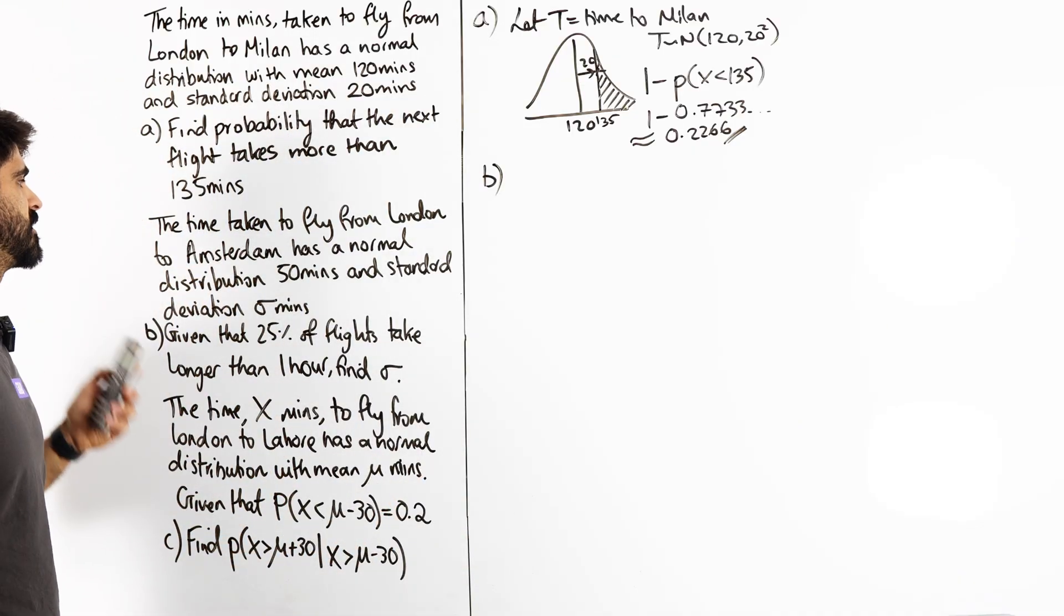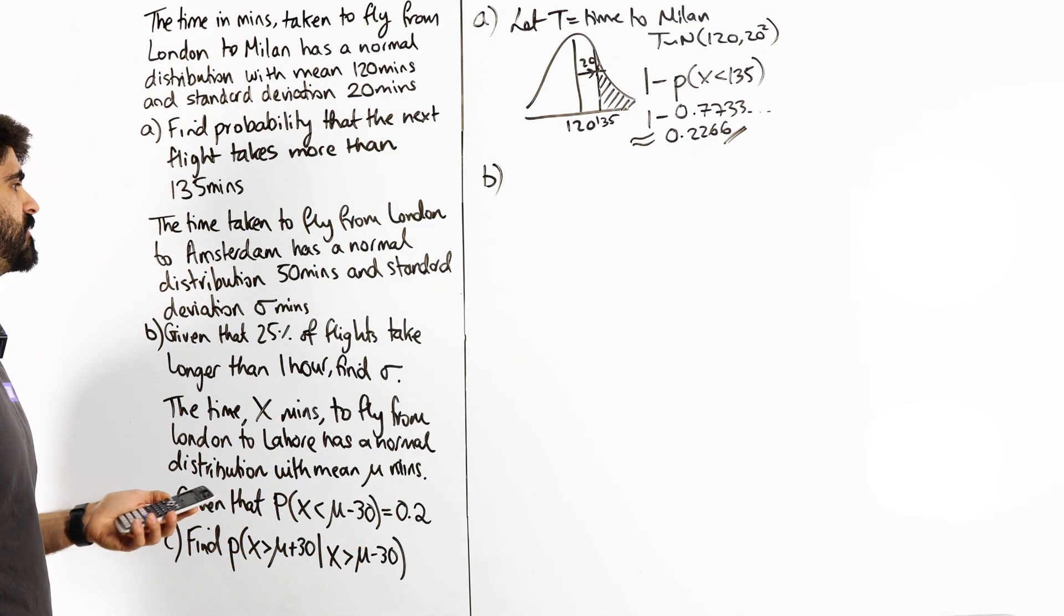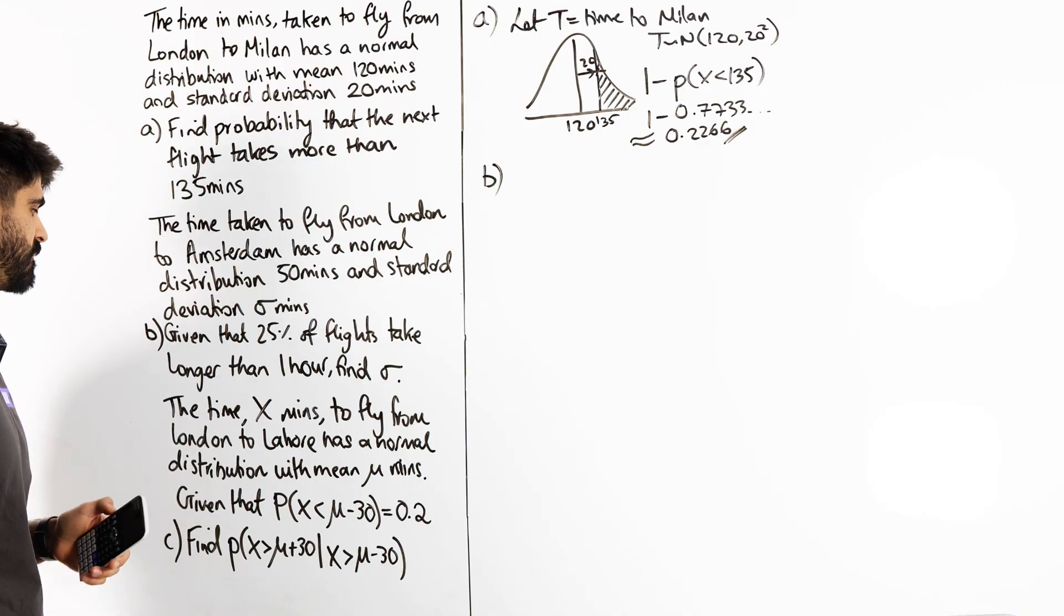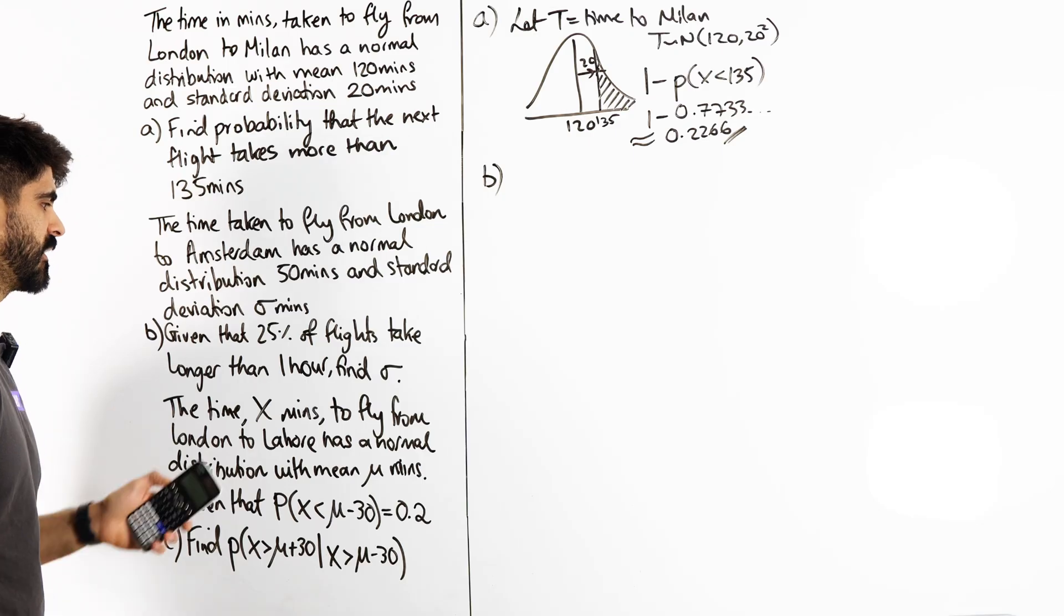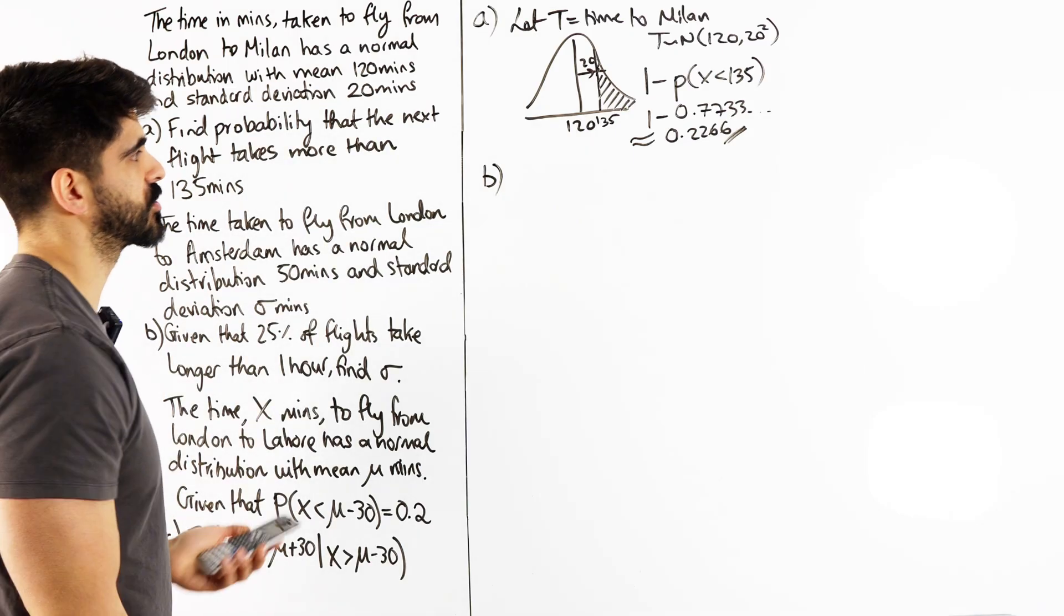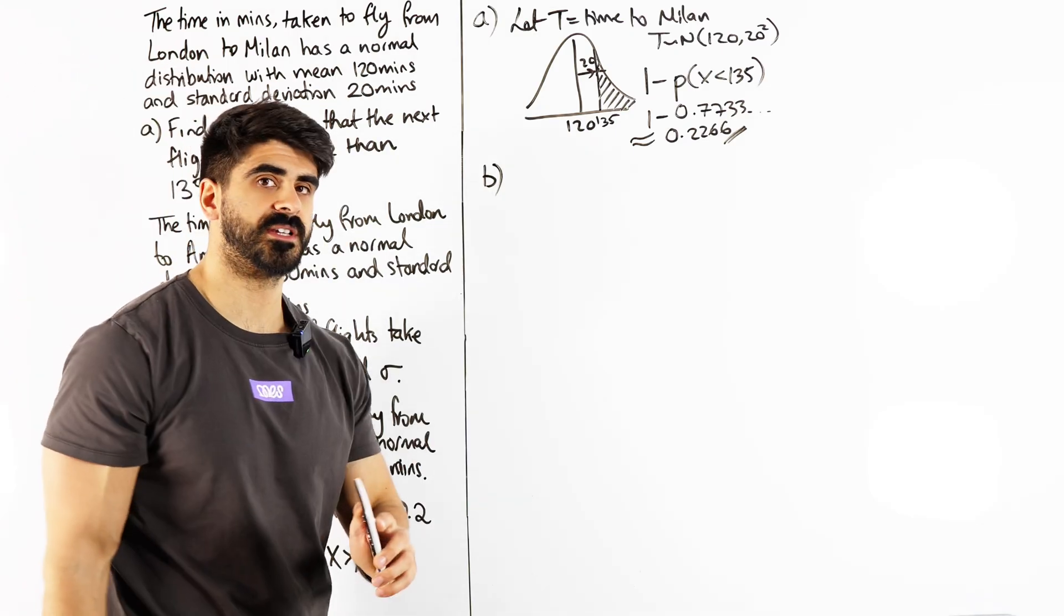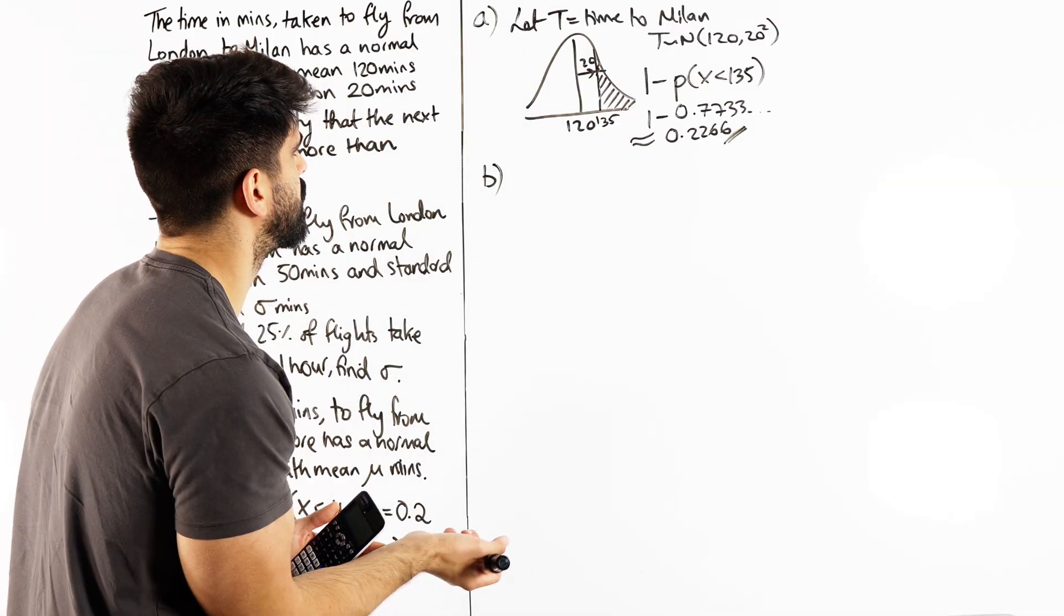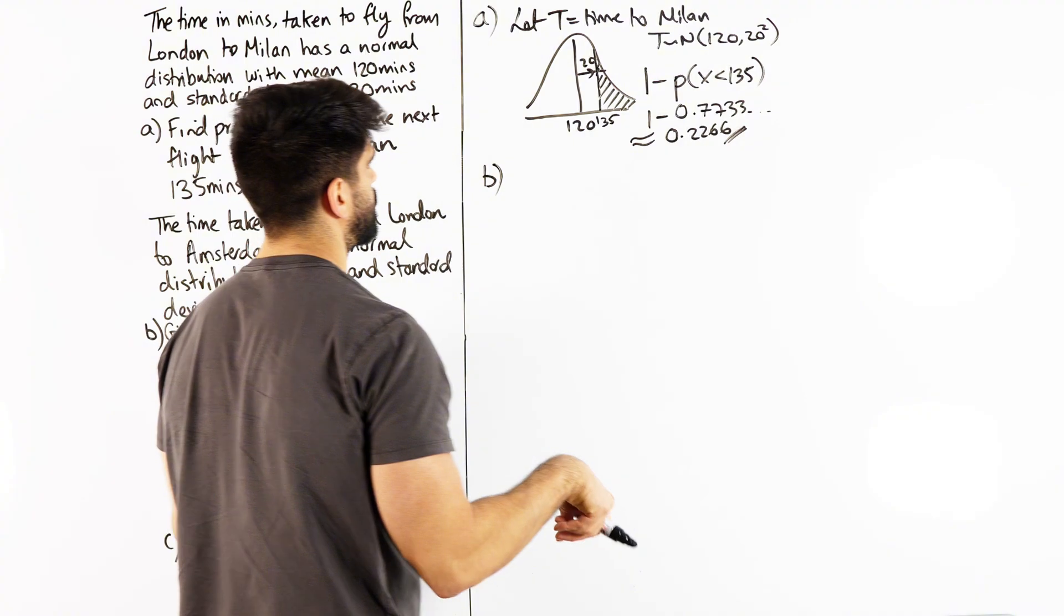The time taken to fly from London to Amsterdam has a normal distribution 50 and standard deviation sigma. Given that 25% of flights take longer than one hour, find sigma. Okay, so this is like the previous question, just the previous video I did where we did simultaneous equations with mu and sigma unknown. This is a much easier one.